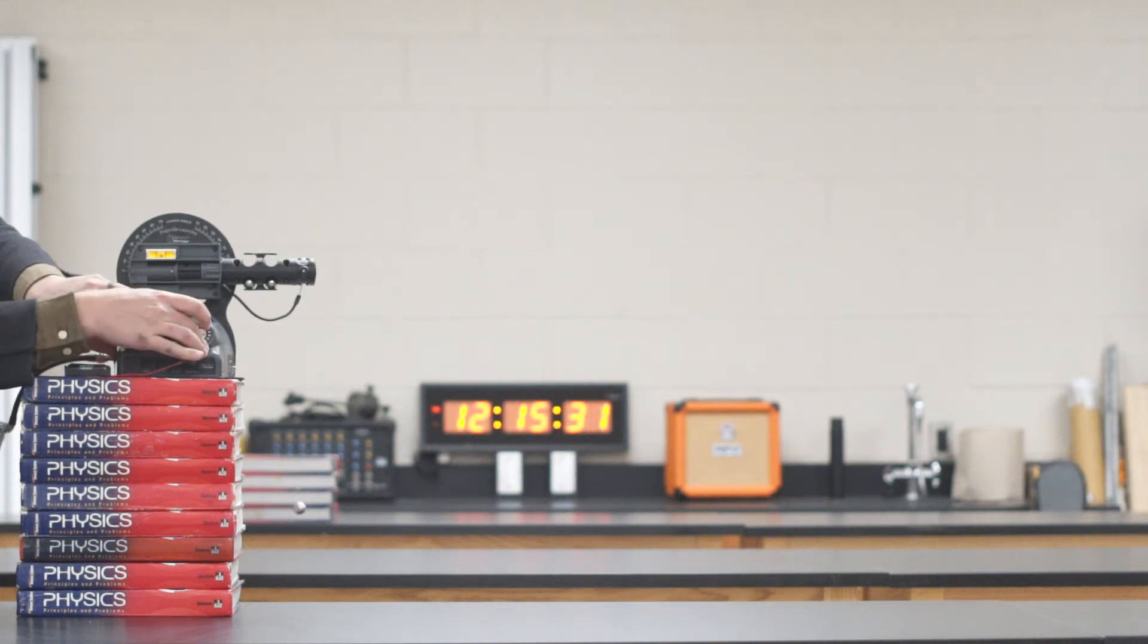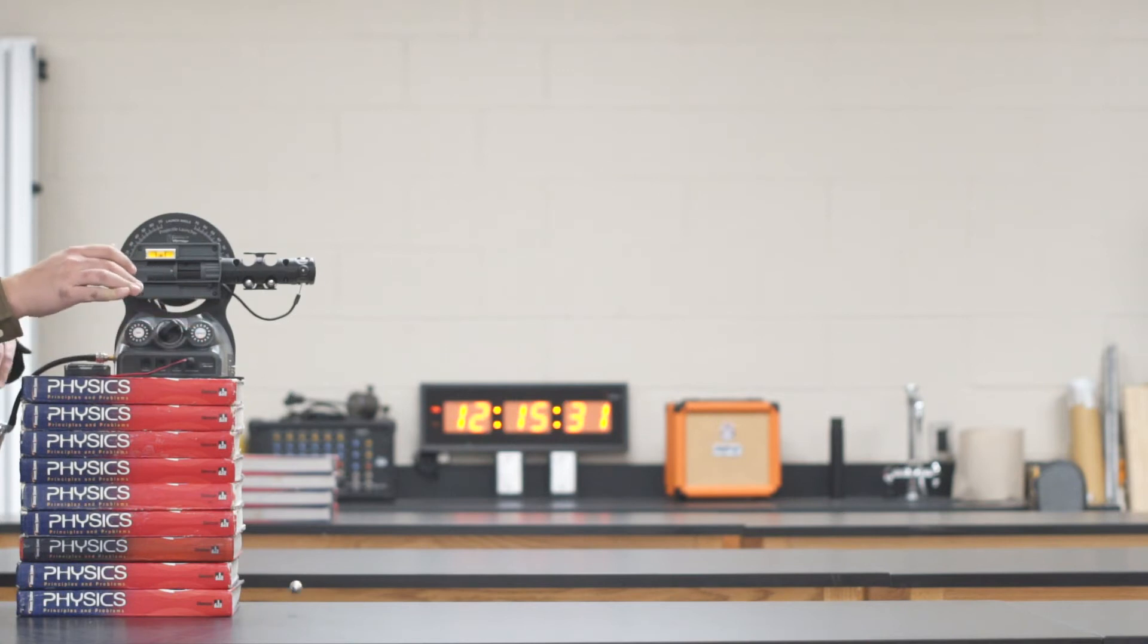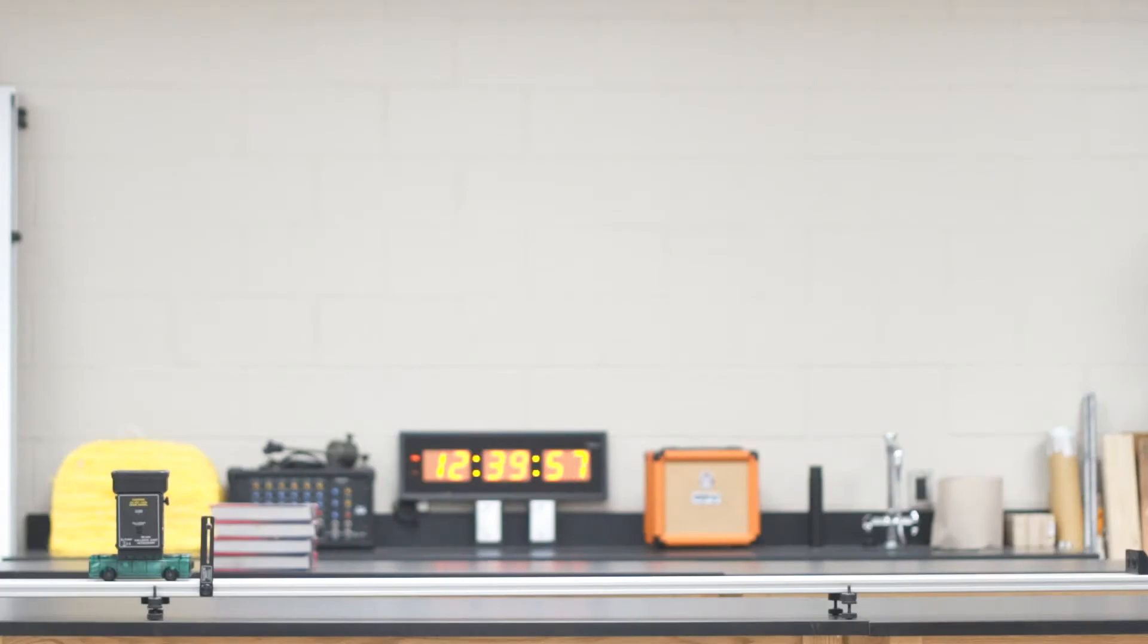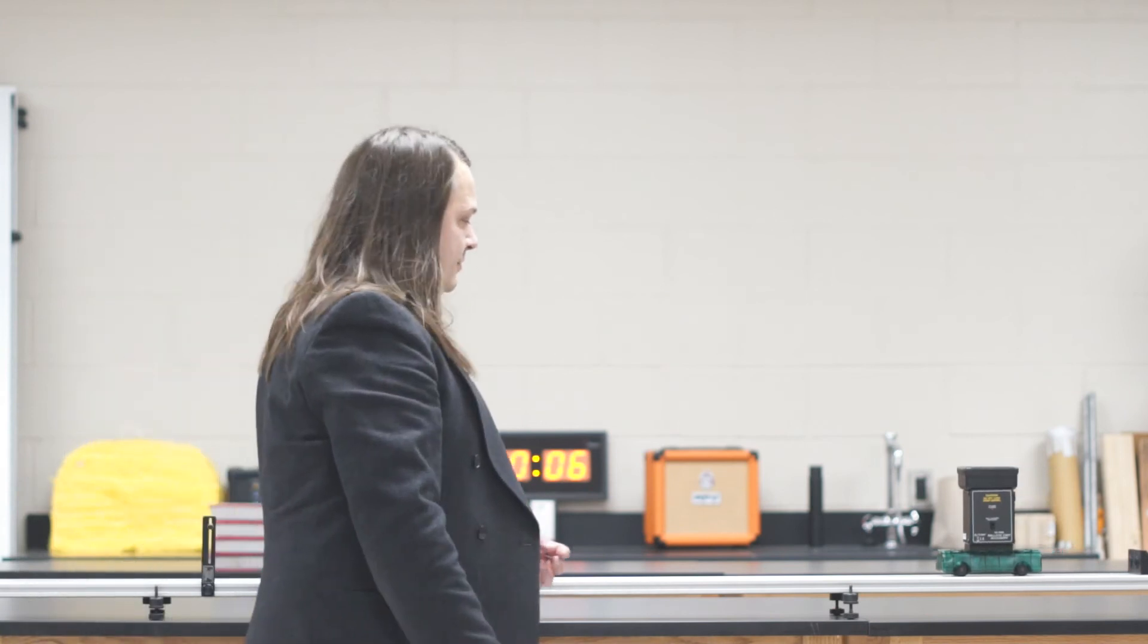We call this the independence of x and y motion. Let's take a look at another example. Here we have a frictionless car with a ball launcher on top. It's going to shoot a ball straight up in the air. Notice how the upward velocity given to the ball was not affected by the forward motion of the car. So this is another example of the independence of x and y motion.